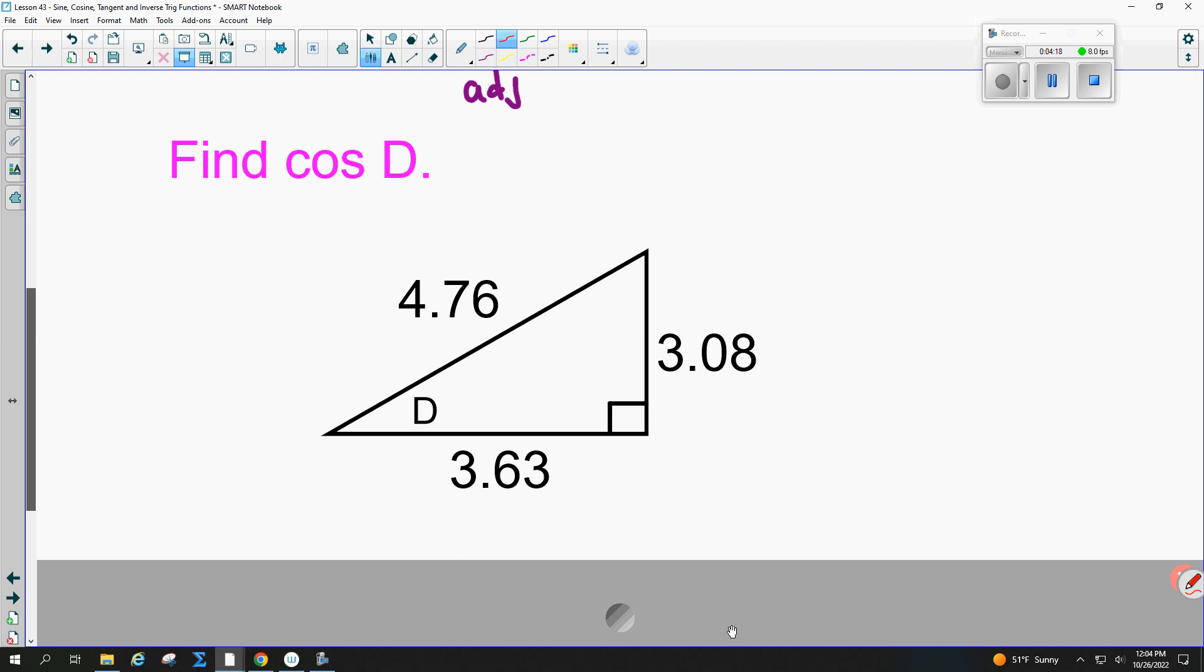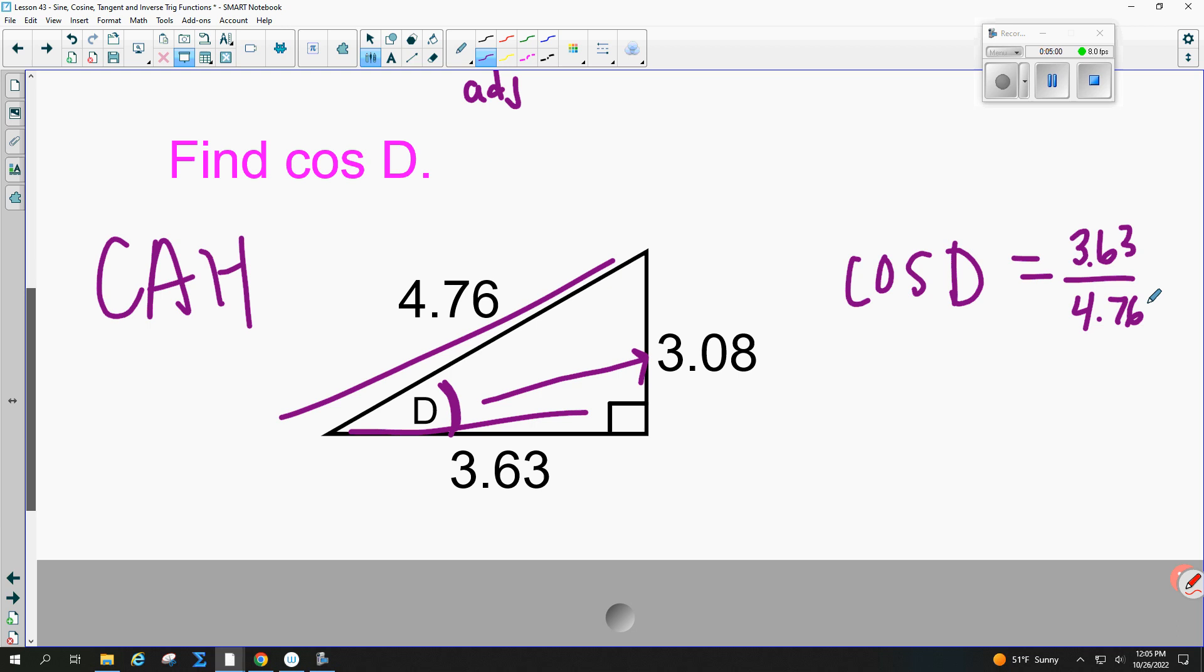Now we're going to find the cosine of angle D. So I have a new triangle now. Cosine is always CA of the SOHCAHTOA, it's the CA part. If I'm talking about angle D, it's always equal to adjacent over hypotenuse. Which side is adjacent? 3.63. This side's opposite, this side hypotenuse. So it's adjacent over hypotenuse, which is 3.63 over 4.76.